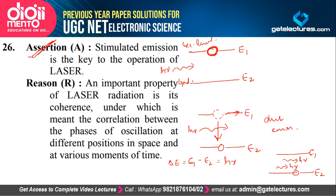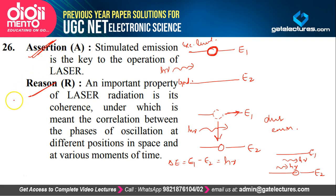The reason states: an important property of laser radiation is its coherence. Coherence means the phase of oscillation at different positions in space and at various moments in time is correlated. Since stimulated emission causes the emitted photon to be in phase with the incoming photon, the reason explains the assertion. Both statements are correct and linked — the answer is option A.